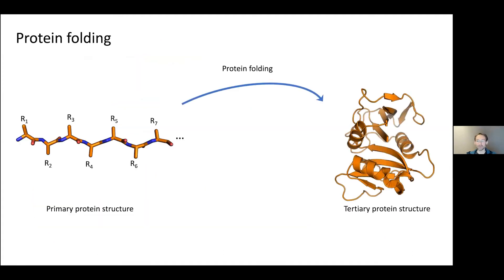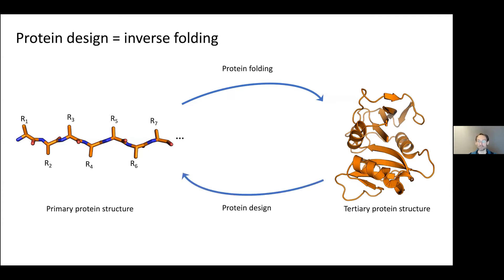The problem of protein folding — predicting the 3D conformation of a protein from its one-dimensional sequence — is a notoriously hard problem in bioinformatics. Recently, machine learning methods have been applied quite successfully, with DeepMind's AlphaFold from two years ago producing particularly groundbreaking results. We are interested in the inverse problem: protein design. We want to design a protein that has certain functionality and properties — for example, a protein that binds to something specific.